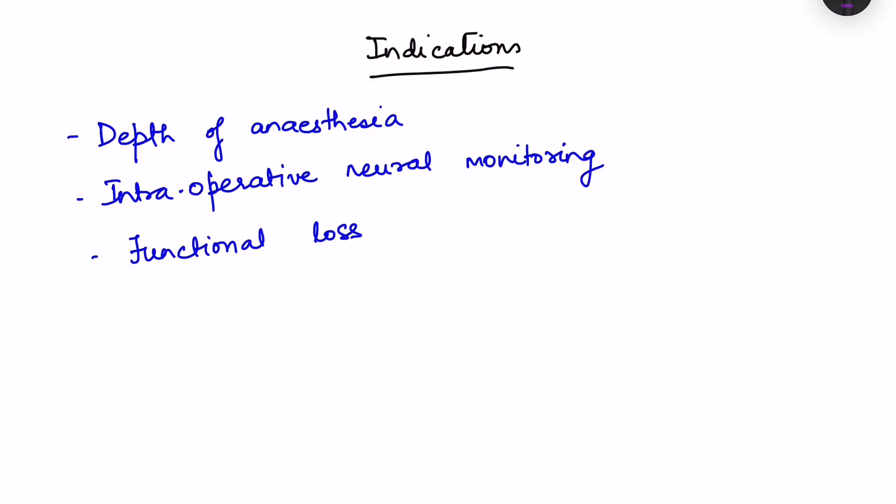Now there are certain general indications for all types of sensory evoked potentials. This is to determine the depth of anesthesia. It is also used for intraoperative neural monitoring, that means when the operation is going on for a particular structure in the spinal cord or in the brain. In that case we monitor these evoked potentials and during monitoring we should ensure that these evoked potentials do not become distorted. For example, the waves are not lost during the operation. Then it is also used to determine the functional loss. For example, determining the hearing level in an infant who cannot respond. So we can determine whether there is an intact auditory pathway for the infant.